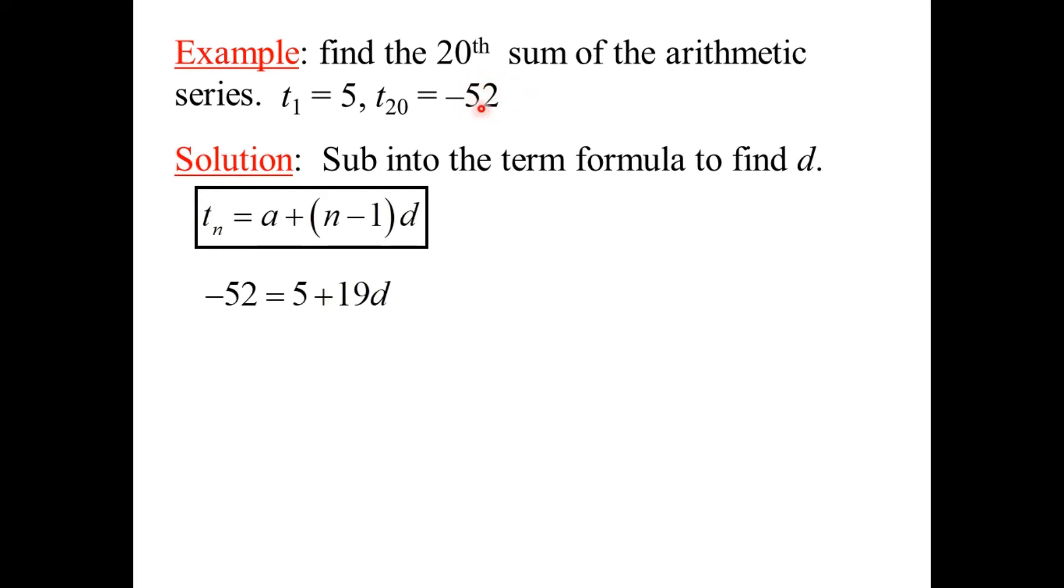So, we can take the minus 52, which we know to be T sub 20, and put it here. A, the first term. A, that's 5. 20 minus 1 is 19, D. A little bit of math. Drag the 5, divide by 19, evaluate. D is negative 3. So, the term formula has stepped up to the plate and given us D.